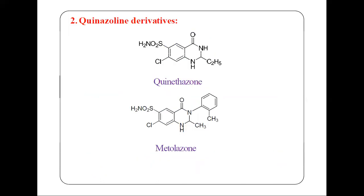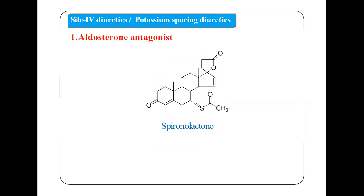The second category within site 3 diuretics is quinazoline derivatives. Examples include quinethazone and butolazone. These compounds contain a quinazoline nucleus.